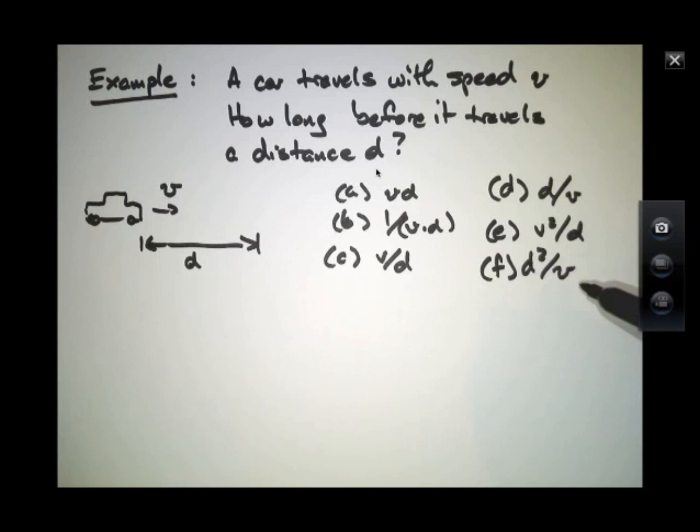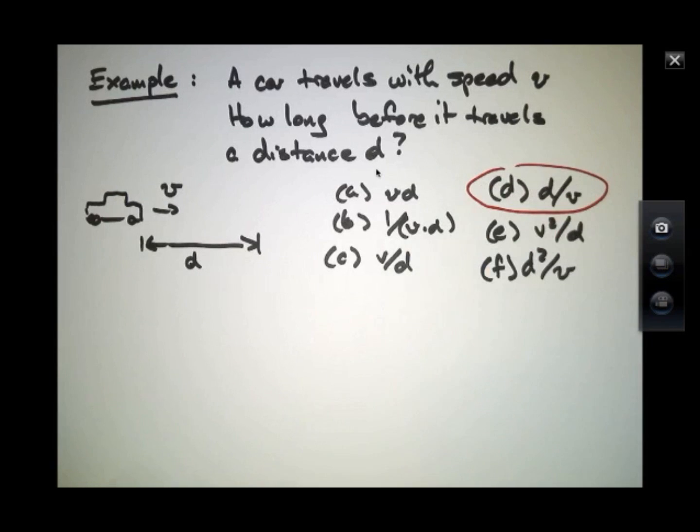And this is a length squared divided by a length over time. So, that becomes a length over a time, a time to time, excuse me. So, in fact, the only correct answer here is this one.